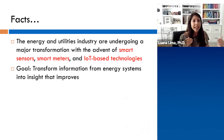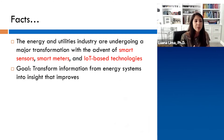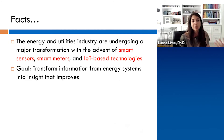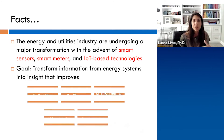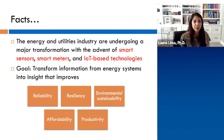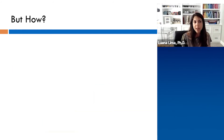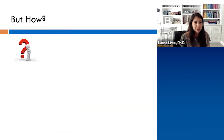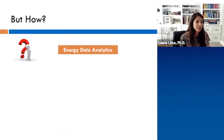This major transformation also means smart sensors, smart meters, and IoT-based technology — in short, more data. The goal is to transform this additional data from energy systems into insights that improve reliability, resilience, environmental sustainability, affordability, and productivity. The answer to achieving those goals is through energy data analytics. There are many possibilities to improve generation performance, transform customer operations, improve grid operations, and transform the utility network.